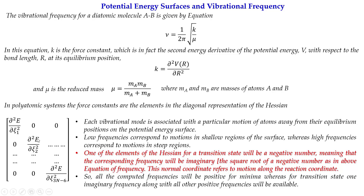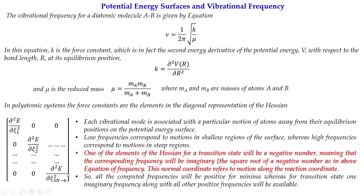If the force constant for a particular reaction coordinate is negative, substituting this negative value into the frequency equation gives a root over a negative number, which means the frequency will be imaginary. So for the transition state, we get all positive frequencies except one single imaginary frequency. From frequency calculations, we can therefore identify and verify the transition state.